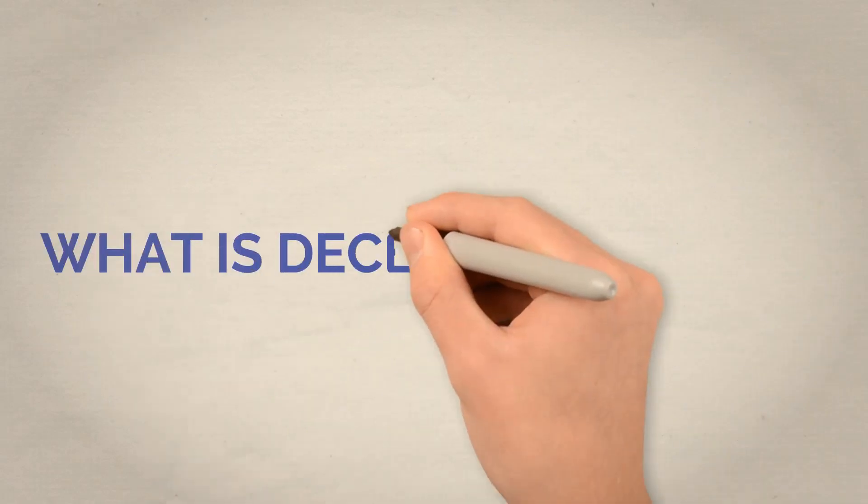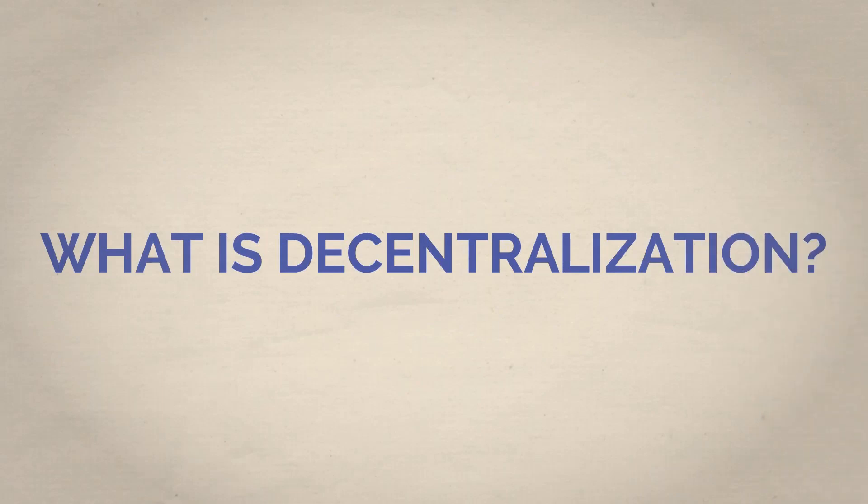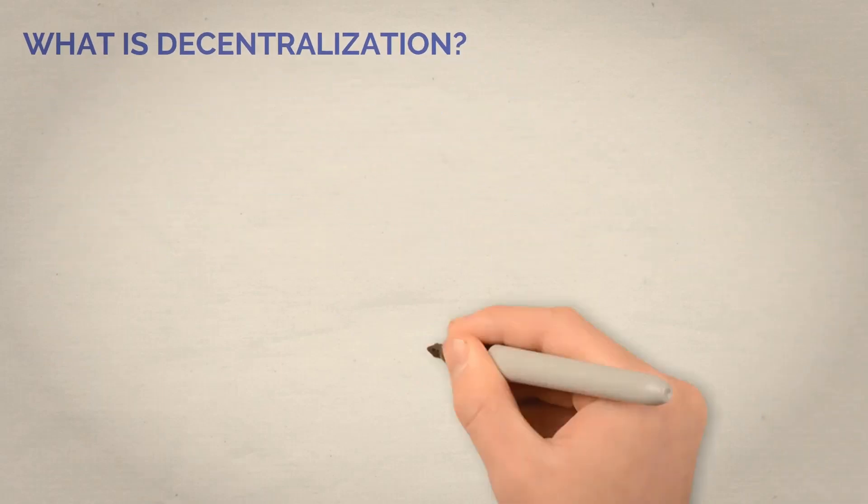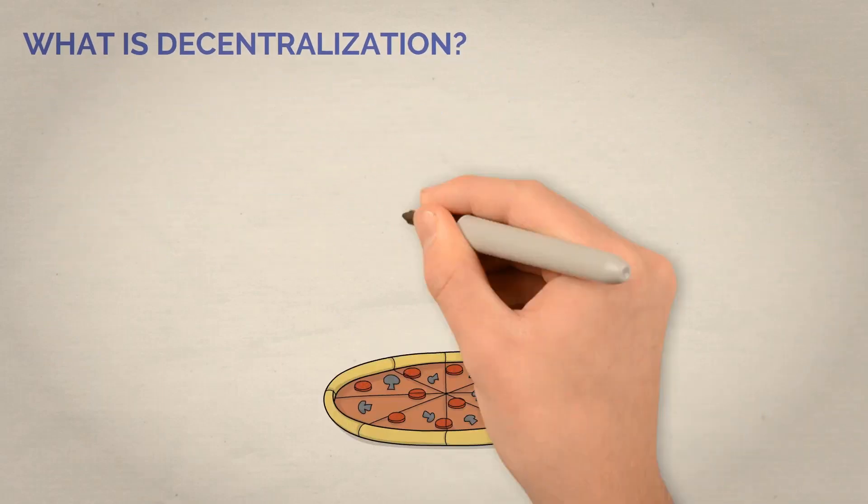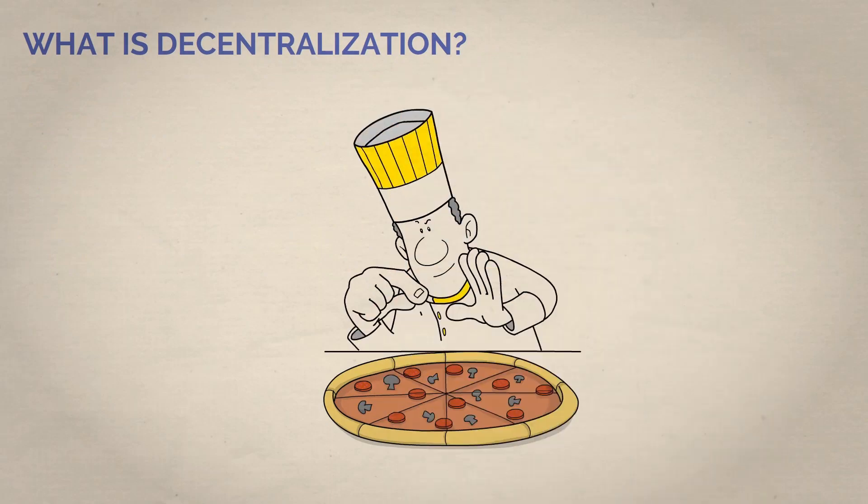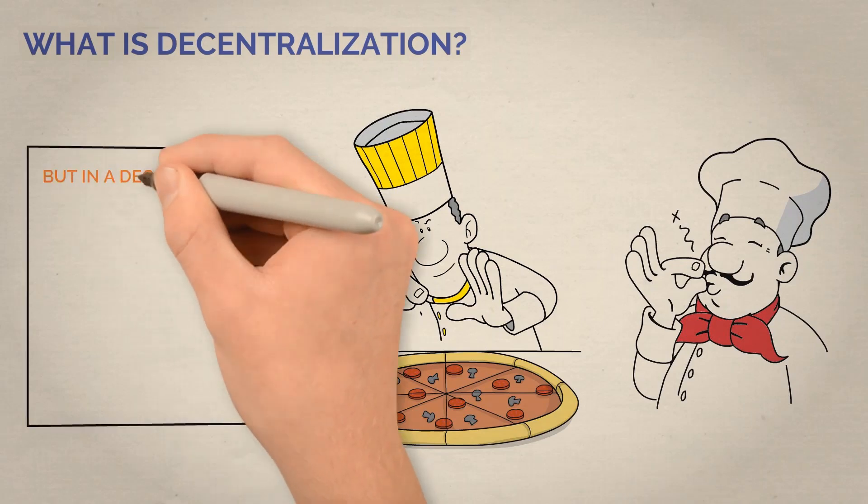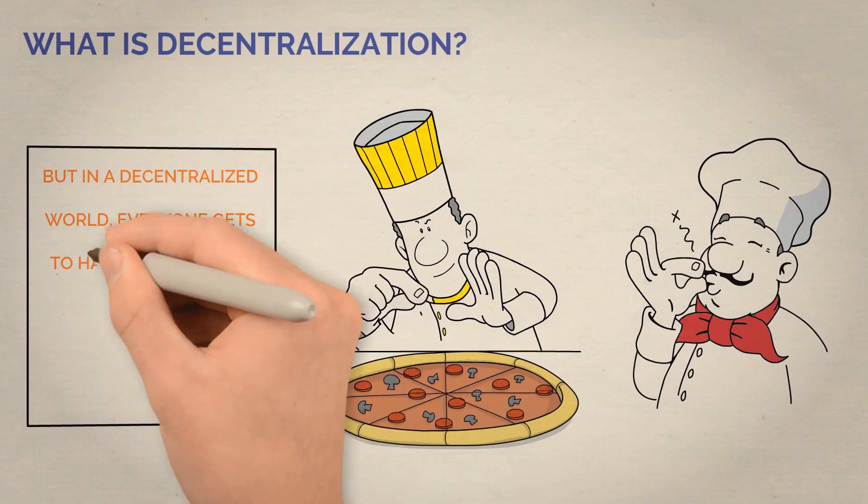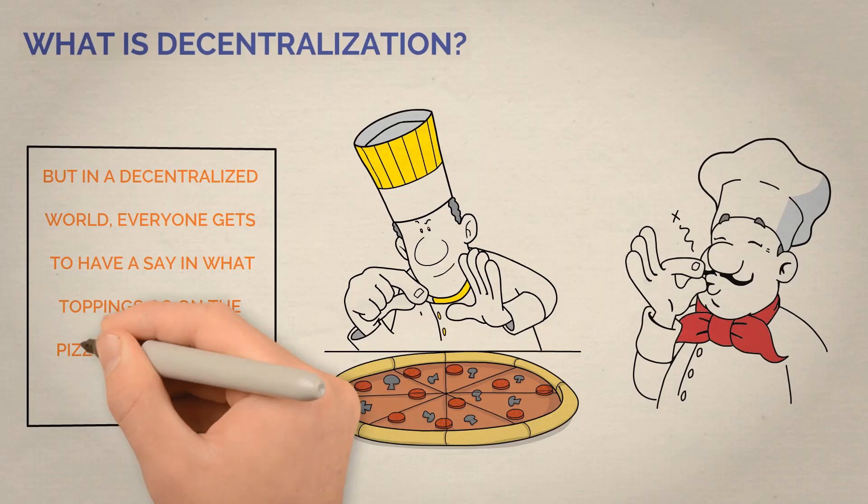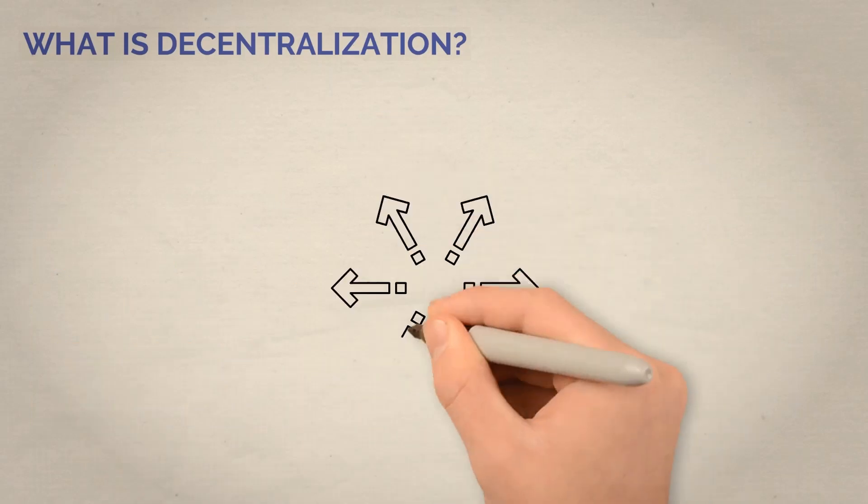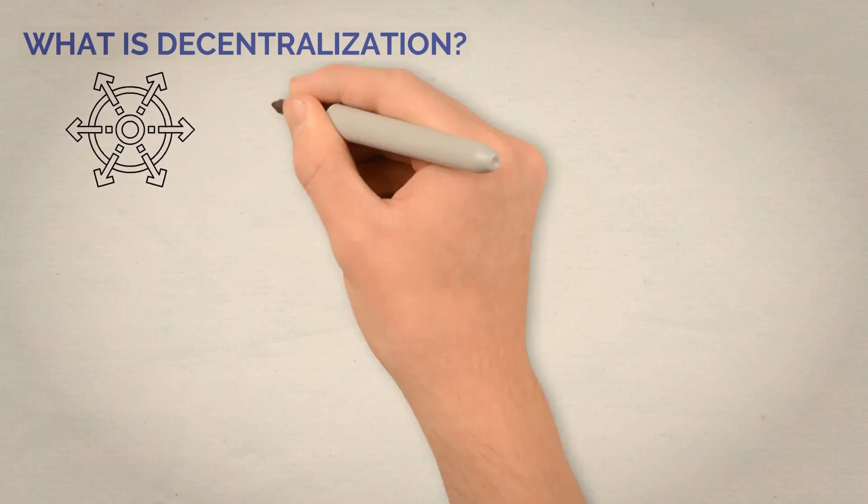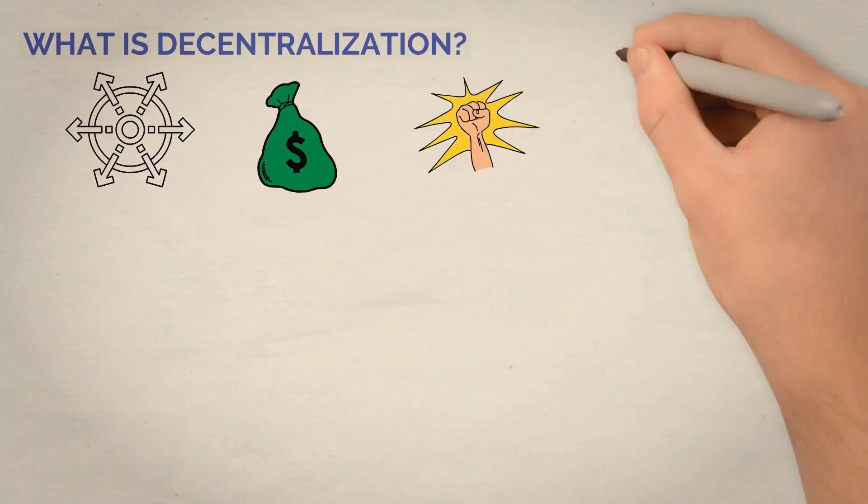Now let's talk a little more about decentralization and what it means for Ethereum. Think of it like a big pizza. In a centralized world, one person gets to decide what toppings go on the pizza, and everyone else just has to eat it. But in a decentralized world, everyone gets to have a say in what toppings go on the pizza, and everyone gets to enjoy a slice. Decentralization can be applied to different things like money, power, information, and more.